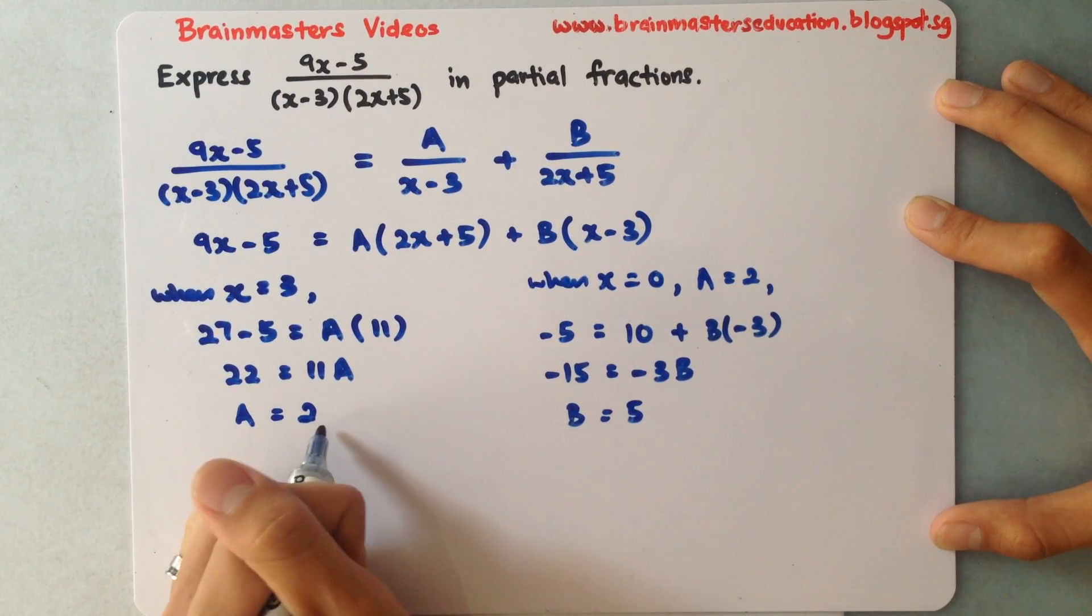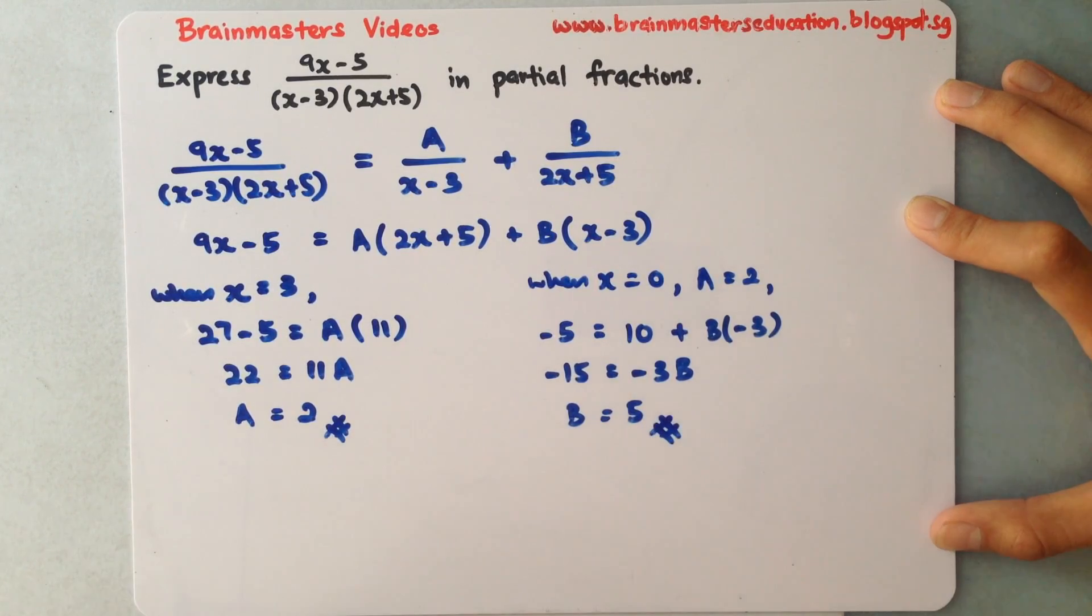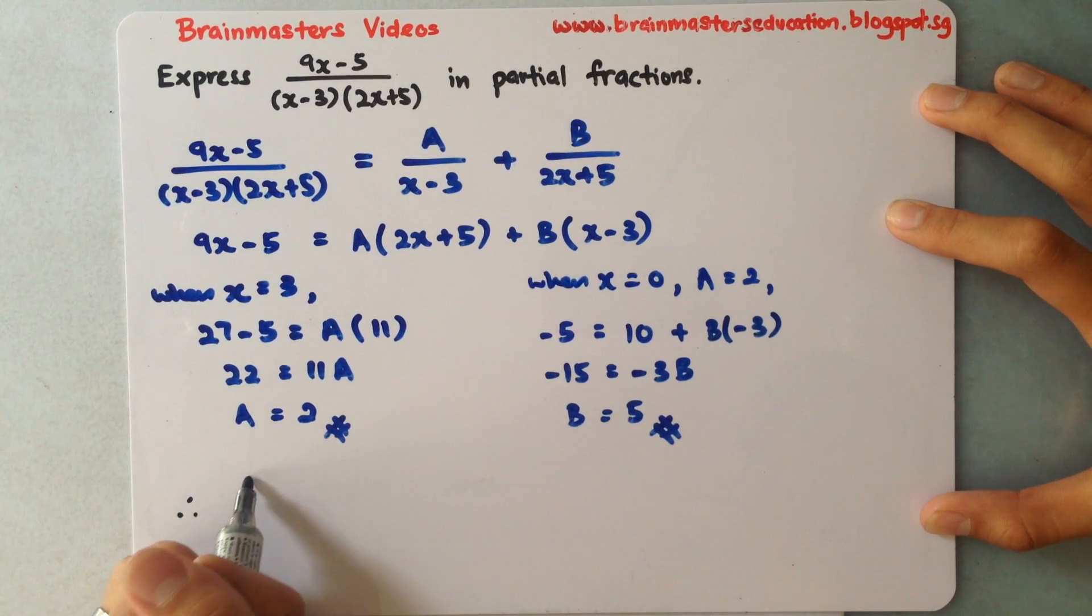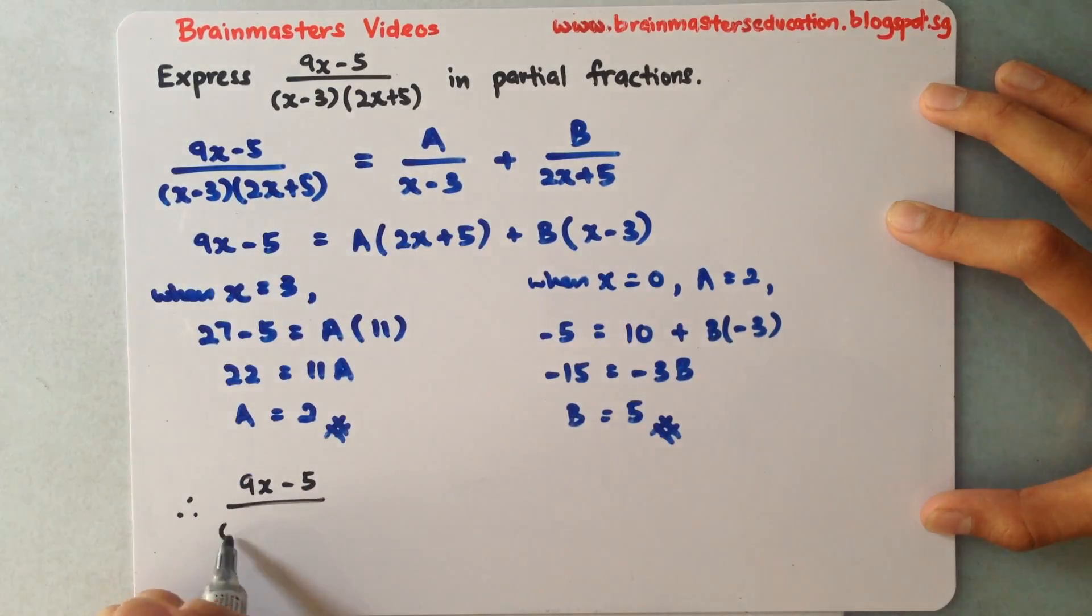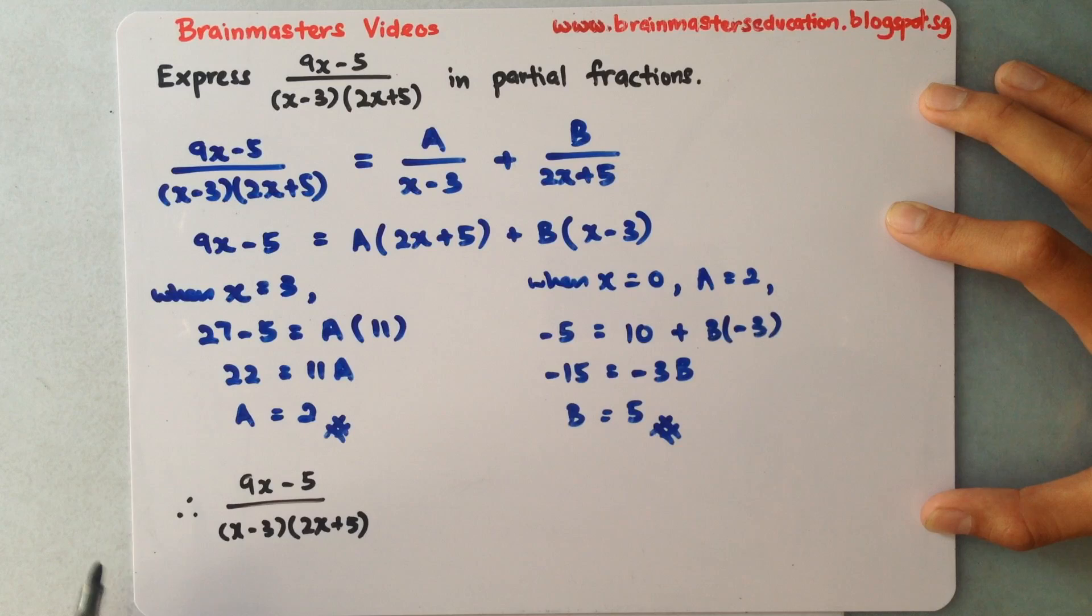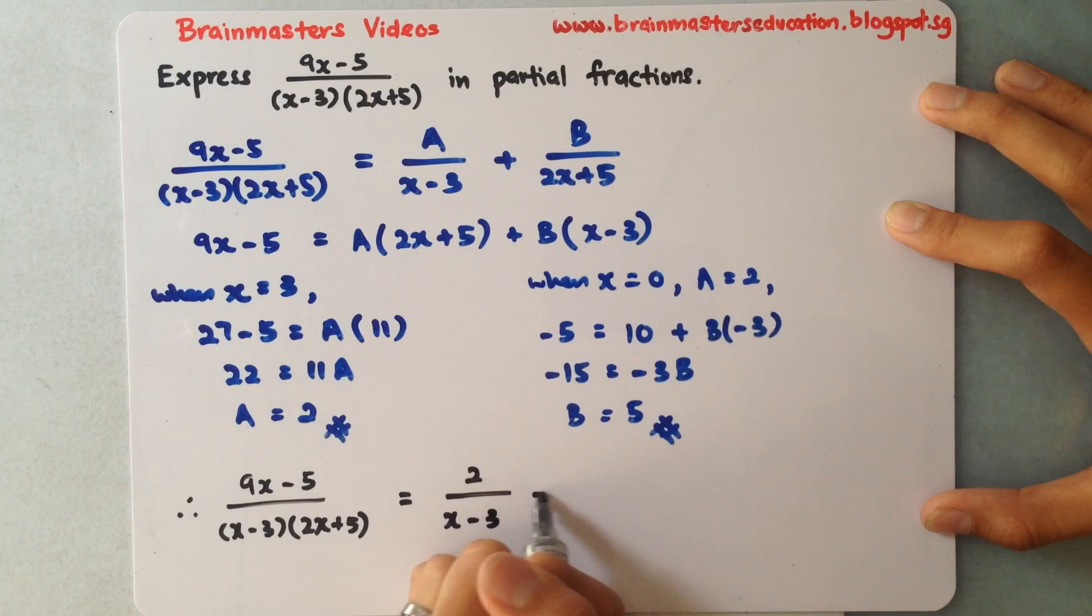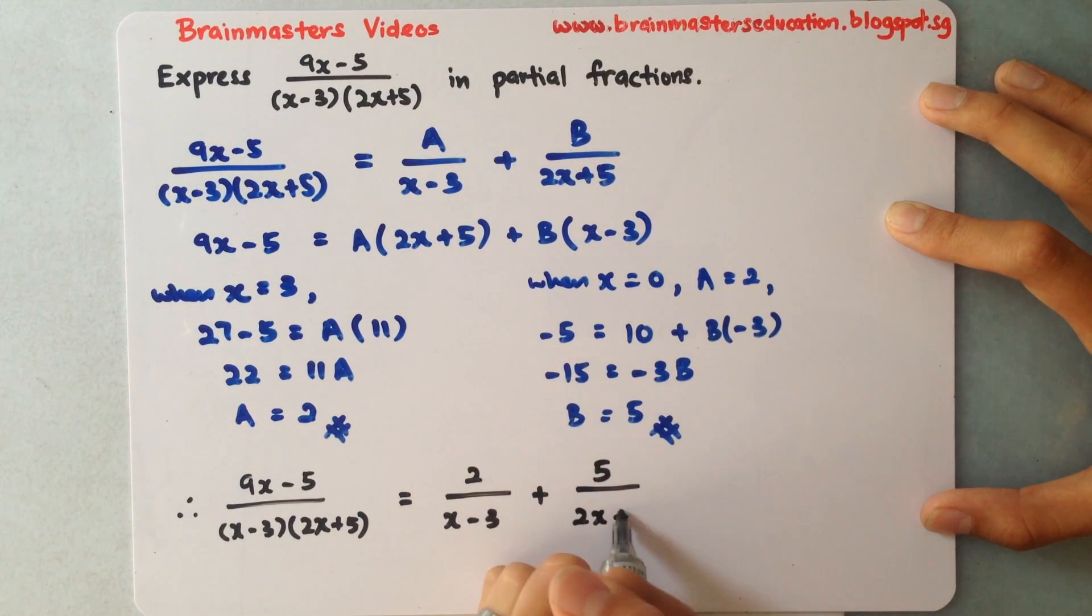I have gotten these two values for A and B, so for my final answer I need to rewrite them. Therefore, (9x-5) over (x-3)(2x+5) equals 2 over (x-3) plus 5 over (2x+5). This is my final answer.